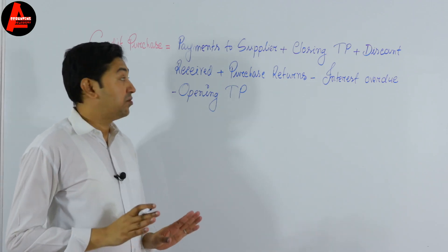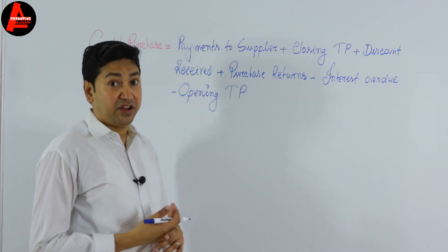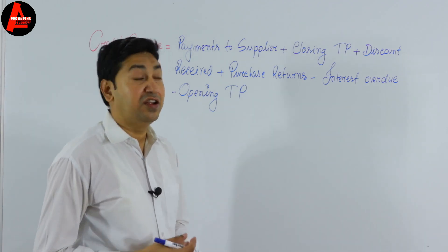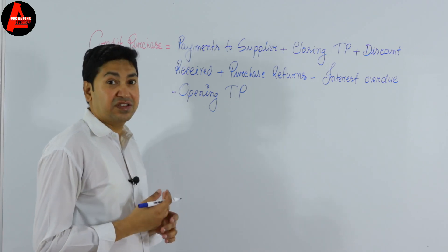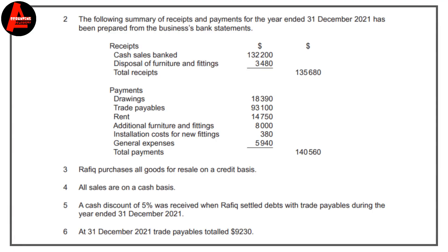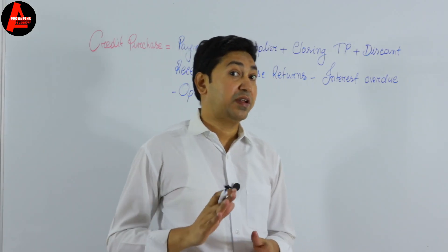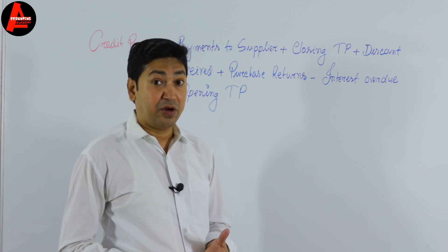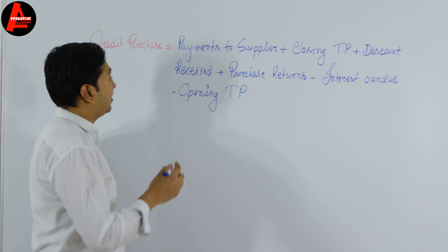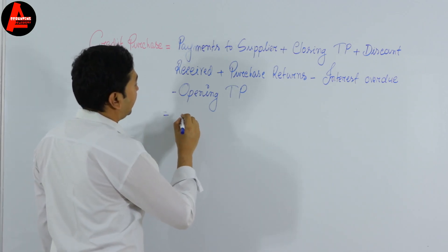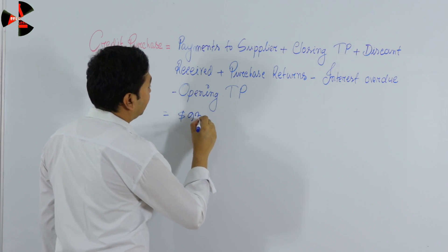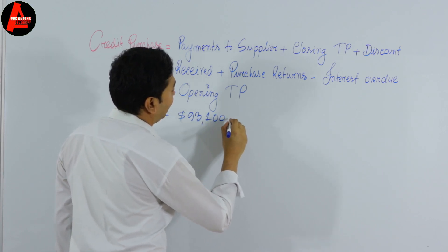You need to remember this formula. Now let's find the values from the question. The first item is payment to supplier. Looking at the receipts and payments, the bank statement shows trade payables paid as $93,100. Whether it's by bank transfer or cheque doesn't matter here. So we write: payment to supplier = $93,100.